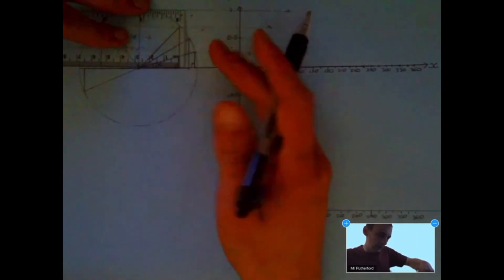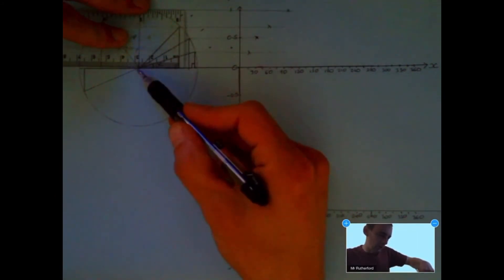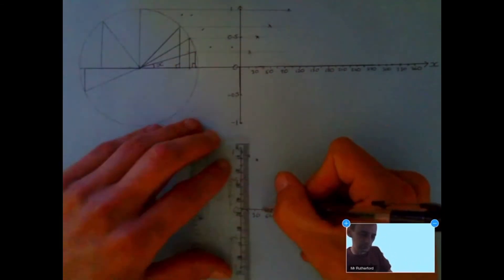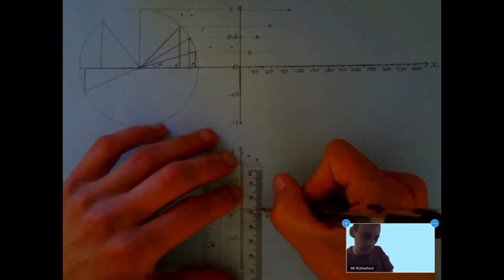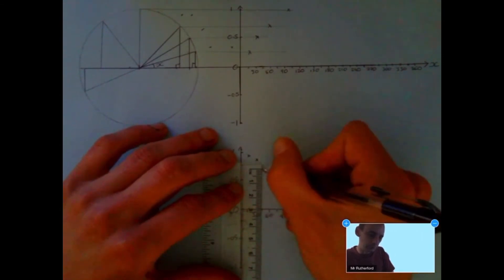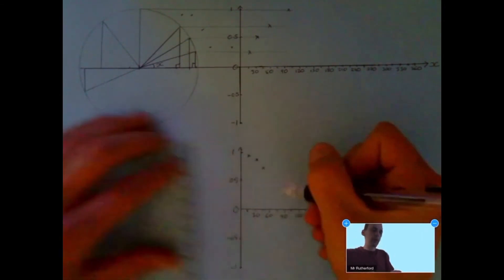So, at 45 degrees, I've got 2.8, so if I measure that up, that will be there. So you can now carry on with these graphs, and when you've done them, when you've plotted all the points, join the points with a nice, smooth curve.